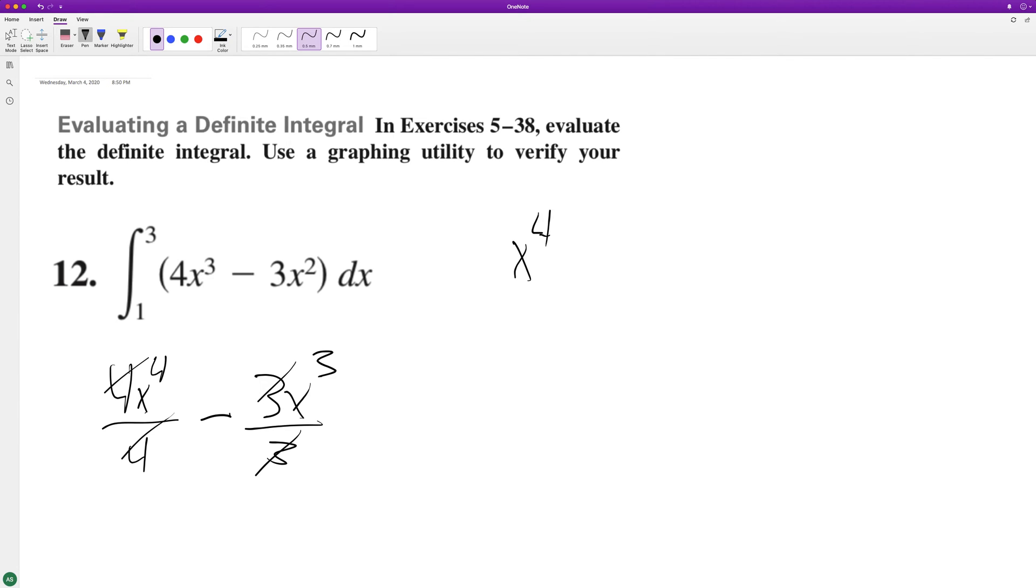x to the 4th minus x cubed from 1 to 3. So what's gonna happen here is we'll get 3 raised to the 4th minus 3 raised to the 3rd minus 1 minus 1, because 1 raised to anything is 1.